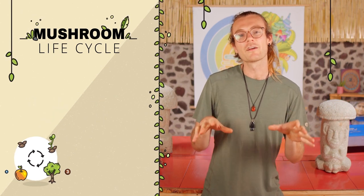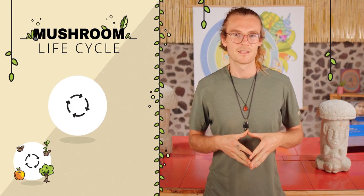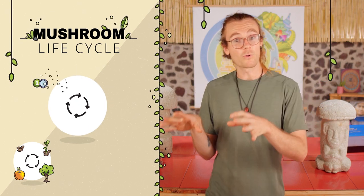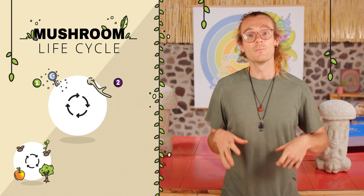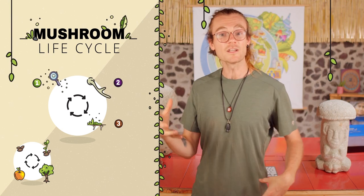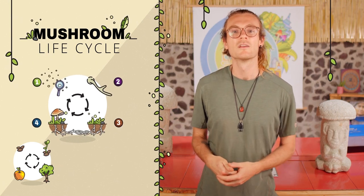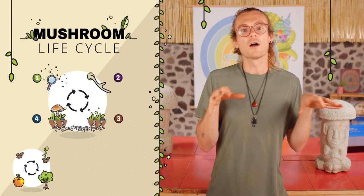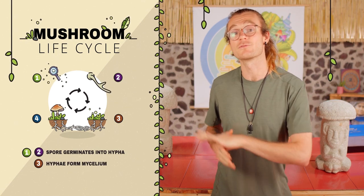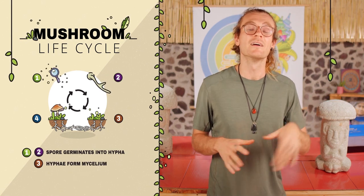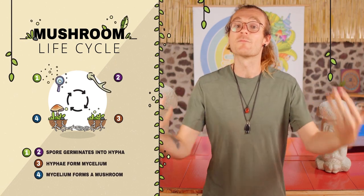The mushroom life cycle works quite similar. A seed is actually a spore, a sprout is a hypha, mycelium is the tree, and mushrooms are the apple. So a spore germinates into hypha, the hyphae weave together to form mycelium, and the mycelium eventually forms a mushroom.